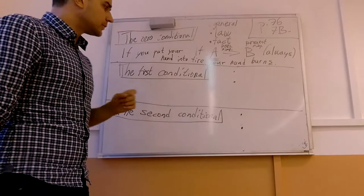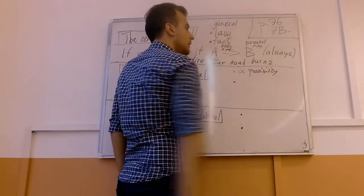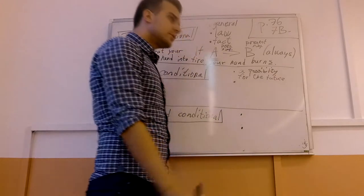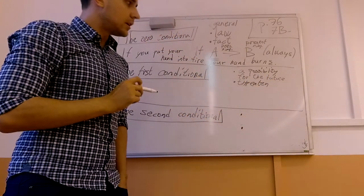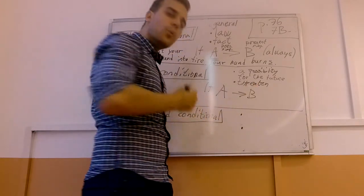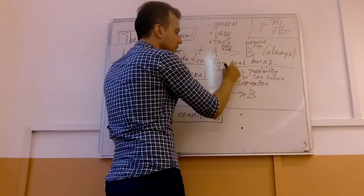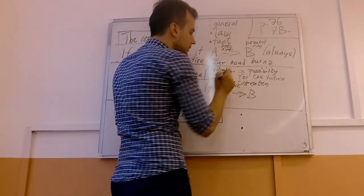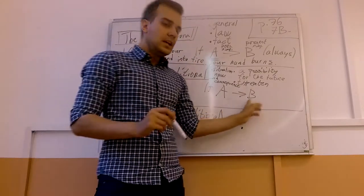Now let's go to the first conditional. In the first conditional, I'm talking about a possibility for the future. I can also threaten someone with this. Because if I say if A, then B will happen. So I'm talking about the situation now and consequence. We have a situation right now, and I'm saying if A happens, B will happen as a result.